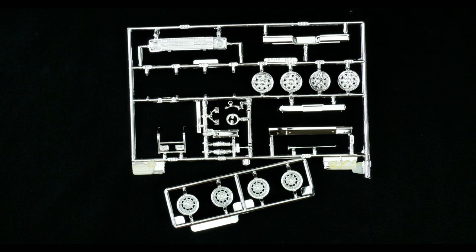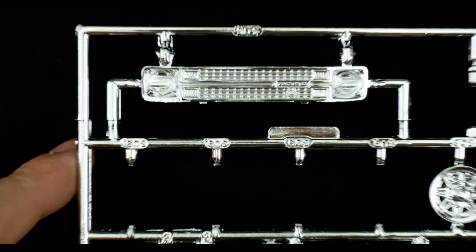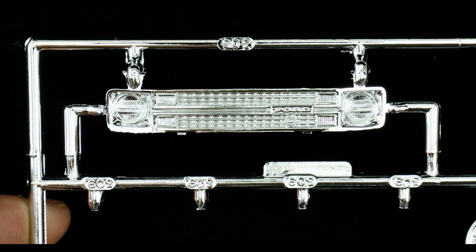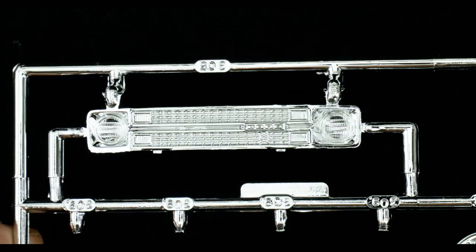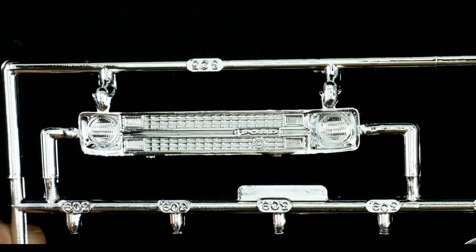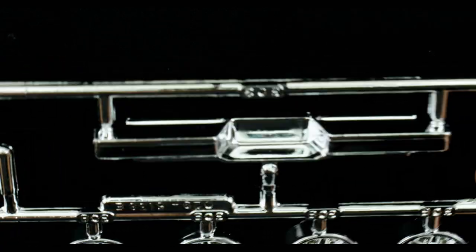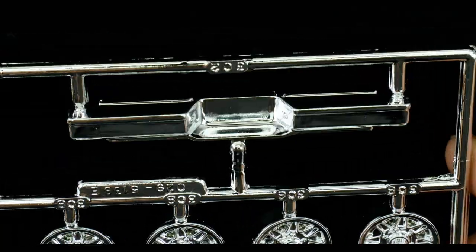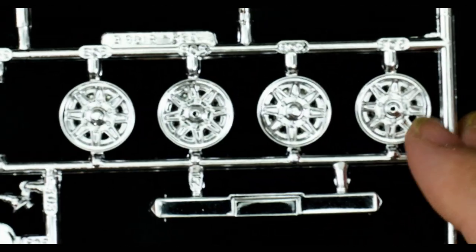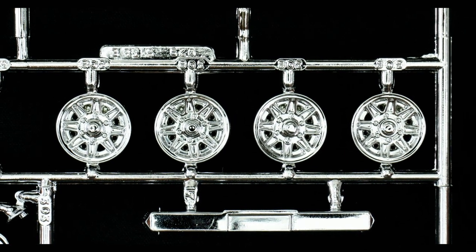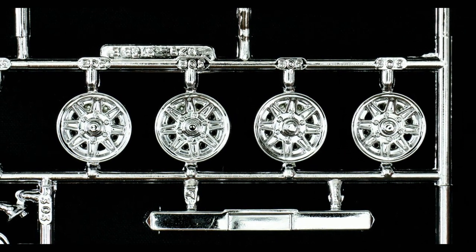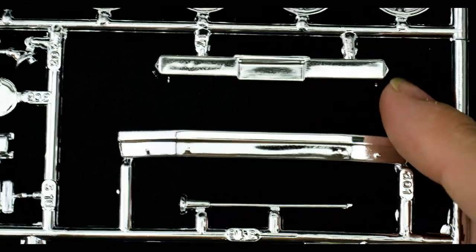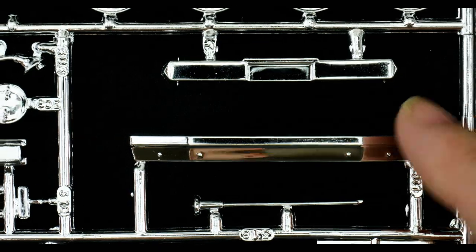Now we're going to take a look at the chrome parts tree. Here we have the stock grill. There's only one grill option, so I don't know why I said that. But there's the grill. And we have the stock rear bumper, step bumper. The stock wheels.